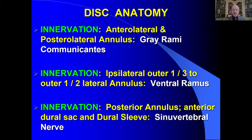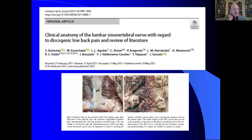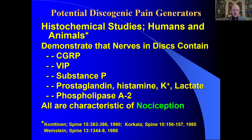The gray rami communicantes innervate the anterolateral and posterolateral annulus in the ipsilateral outer third to outer half. The ventral ramus innervates the same region laterally. The all-important sinuvertebral nerve innervates the posterior annulus, the anterior dural sac, and the sleeve of the dura. Posteriorly we see the sinuvertebral nerve; laterally and posteriorly the ventral ramus; and laterally the gray rami communicantes. The sinuvertebral nerve has received a lot of attention — a paper by Quinonez and Associates in the European Spine Journal in 2021 details its anatomical considerations and implications for discogenic pain in the lumbar spine.